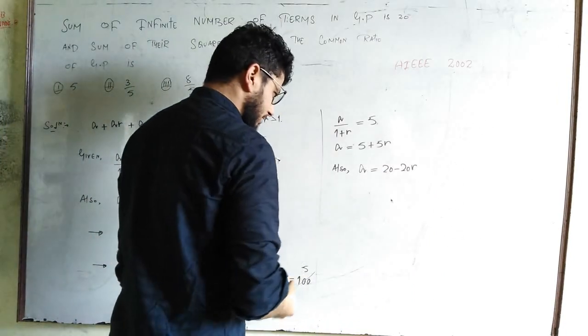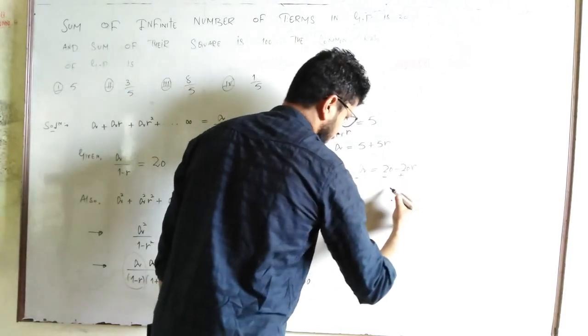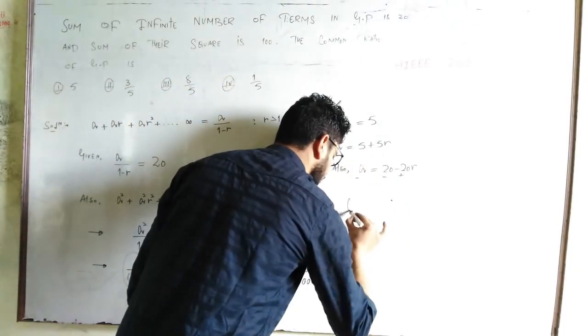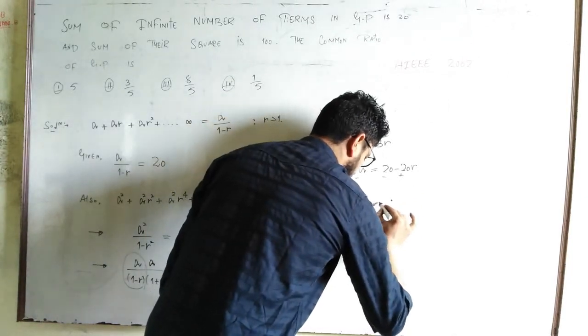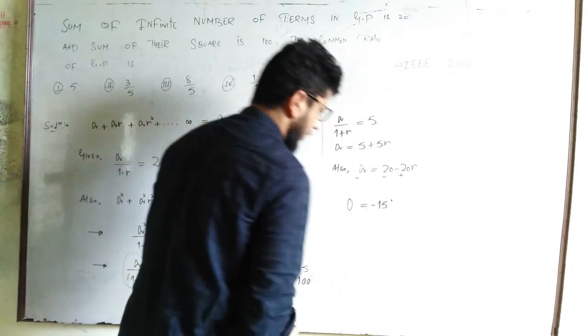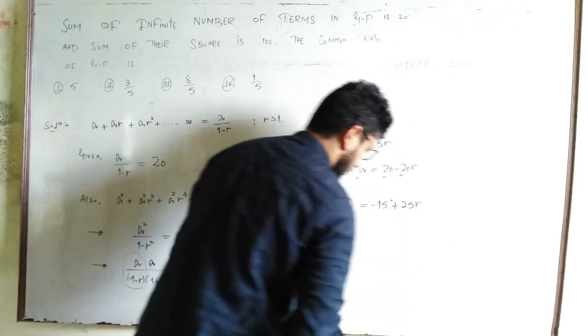Now, subtract these two equations. The a terms cancel, and we get -15, which becomes 25r.